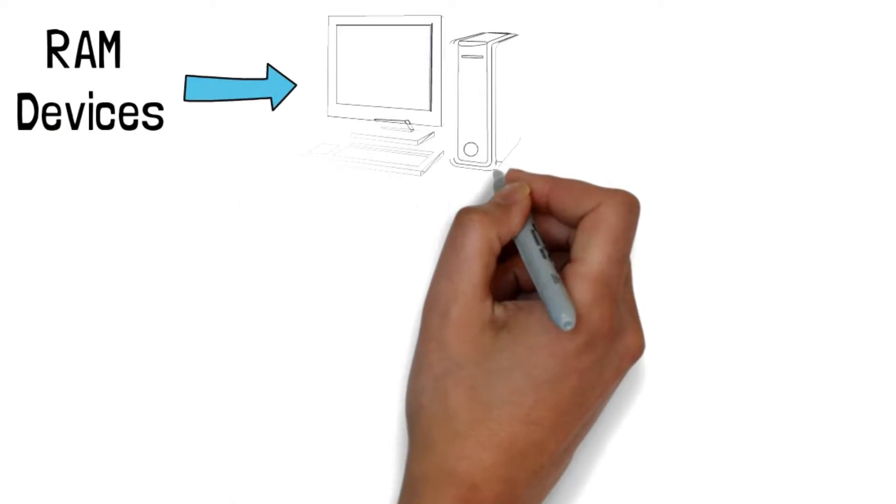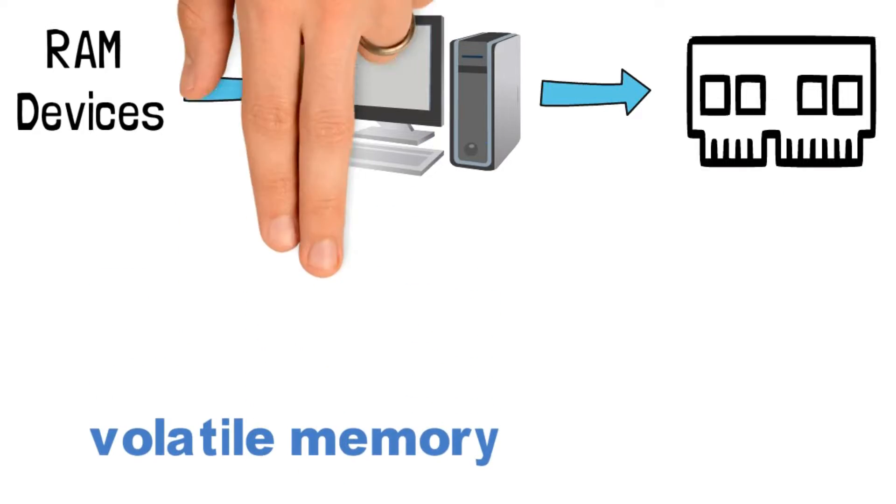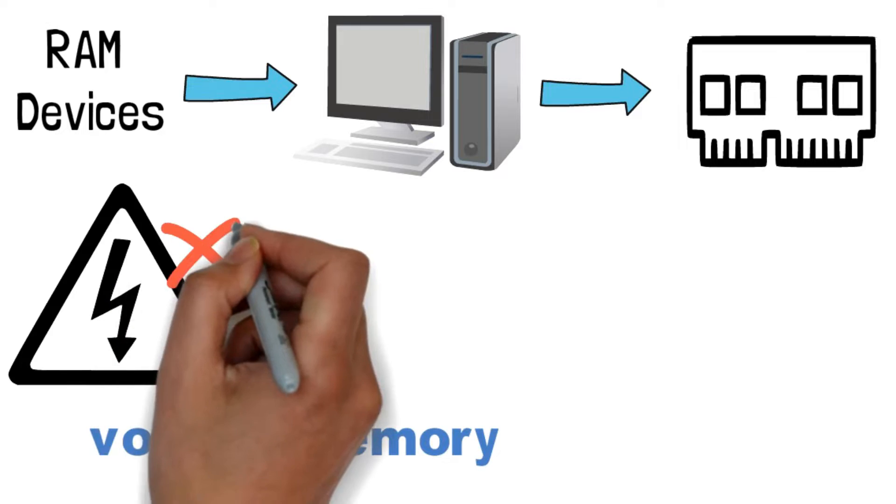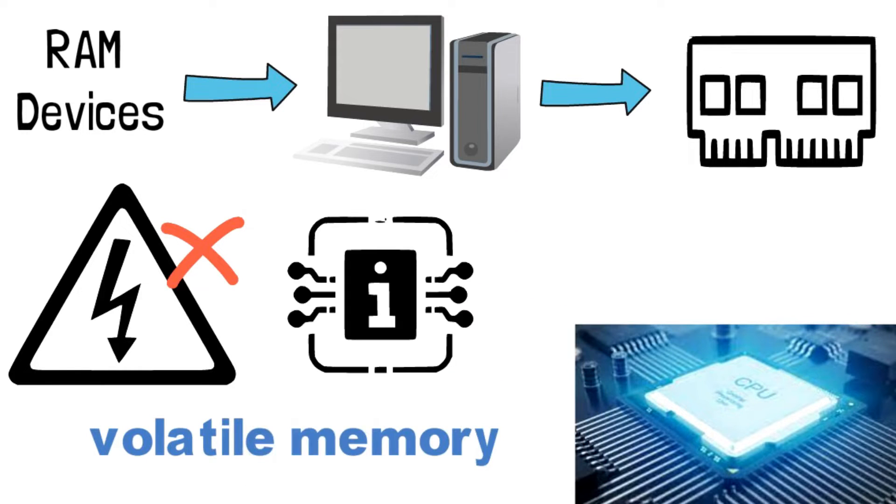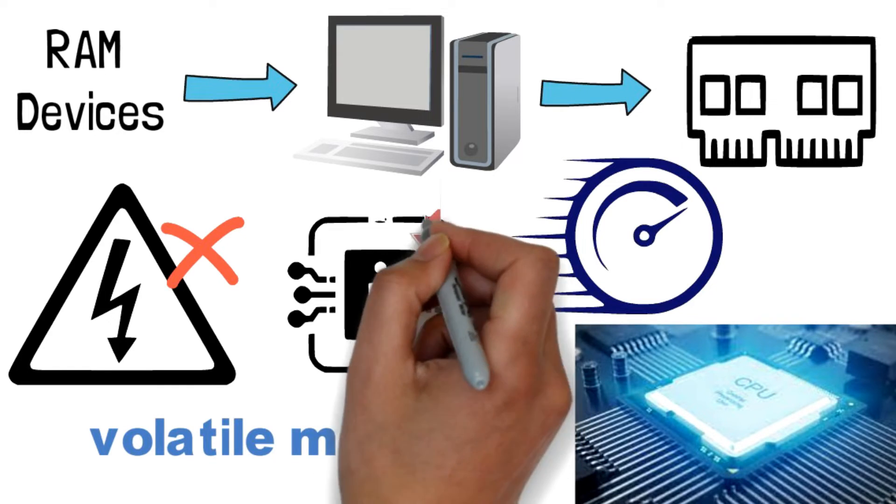RAM devices are used in computer systems as the main memory. RAM is considered volatile memory, which means that the stored information is lost when there's no power. So RAM is used by the central processing unit, or CPU, when a computer is running to store information that it needs to be used very quickly. But it does not store any information permanently.